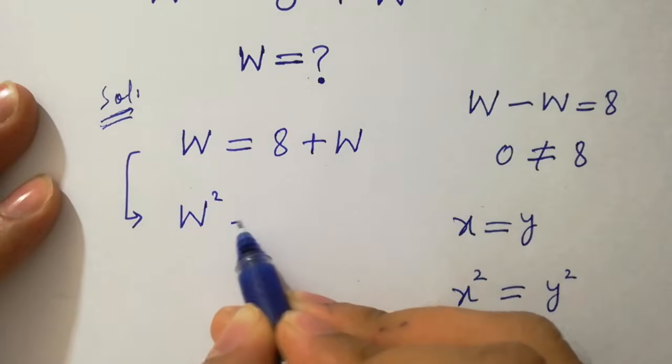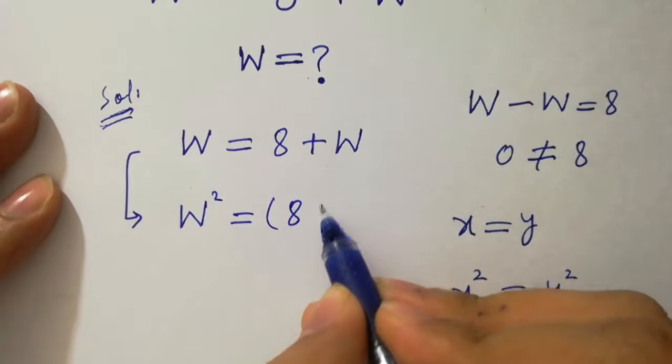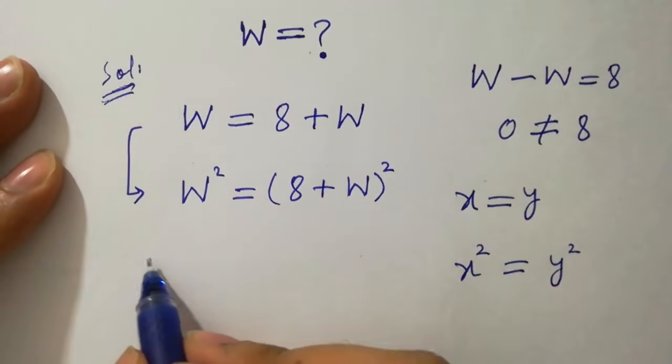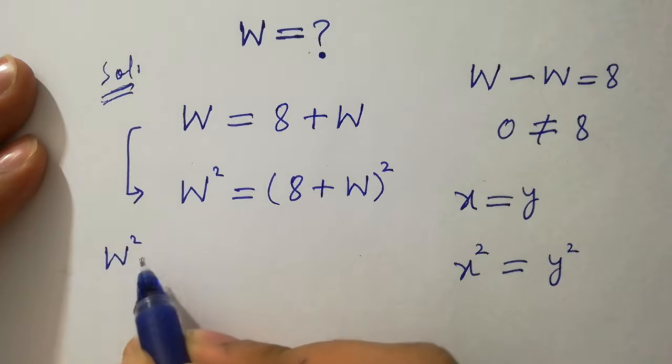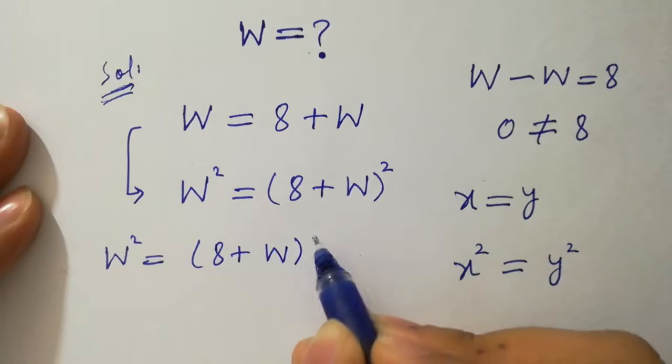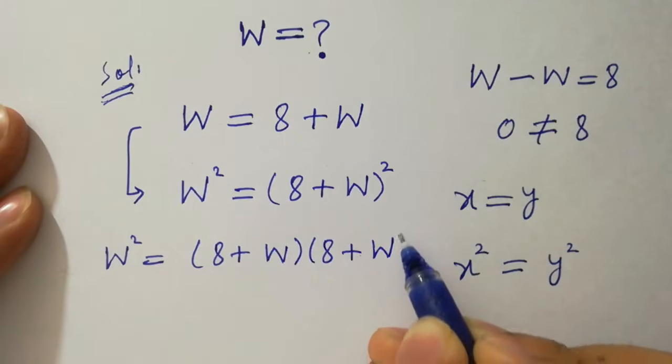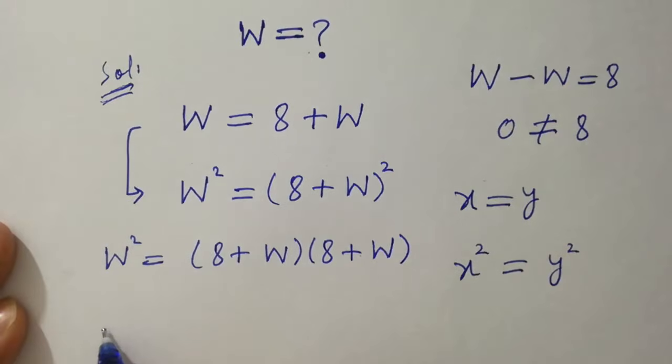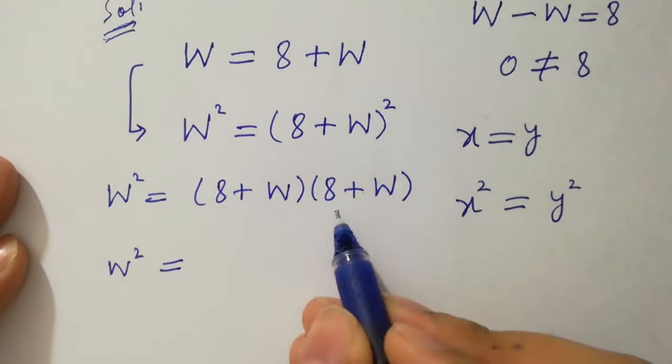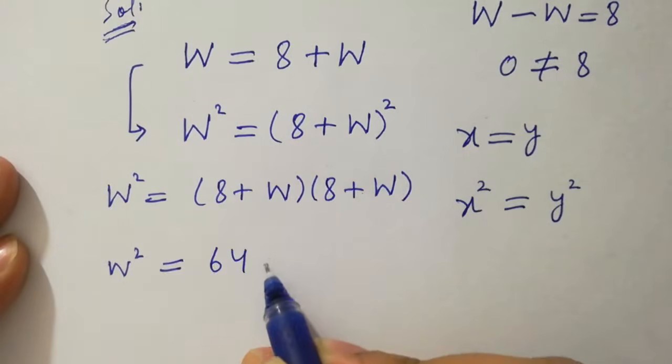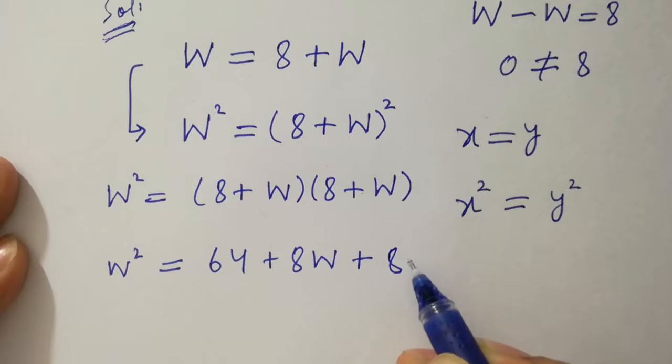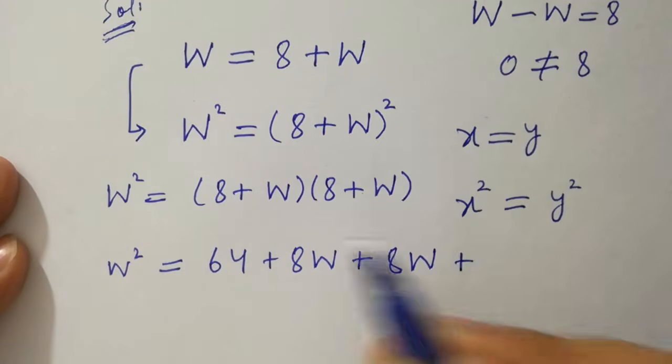W square equals to 8 plus w square. W square equals to this is same as 8 plus w. W square equals to 8 times 8 is 64 plus 8w plus 8w plus w square.